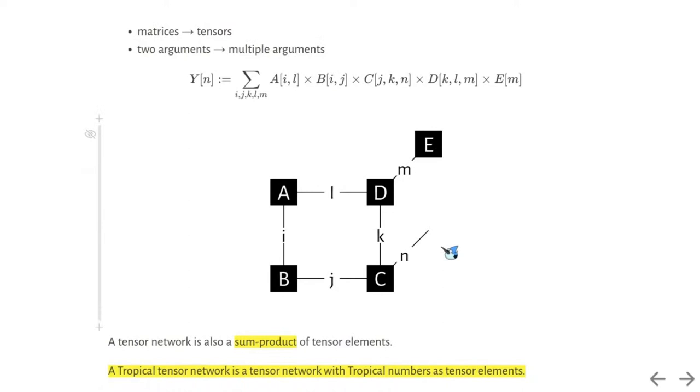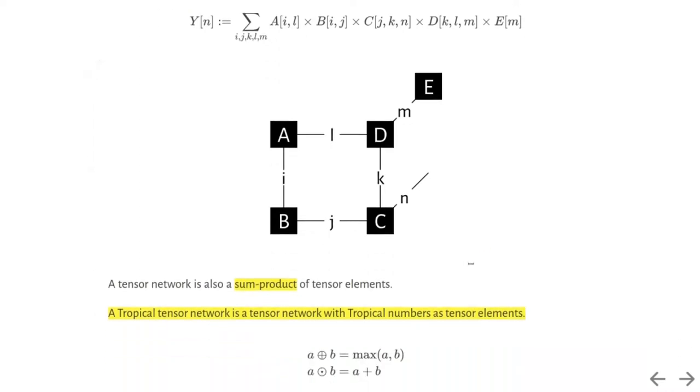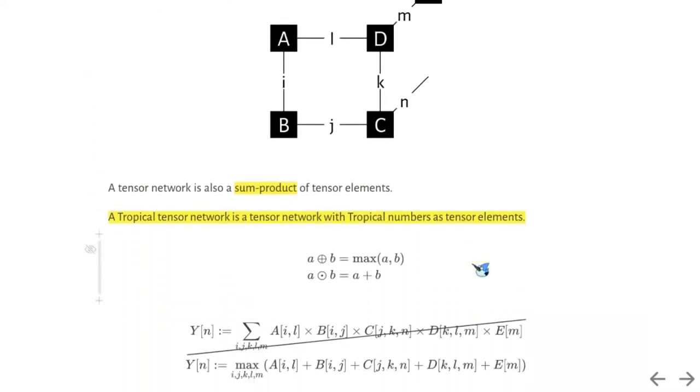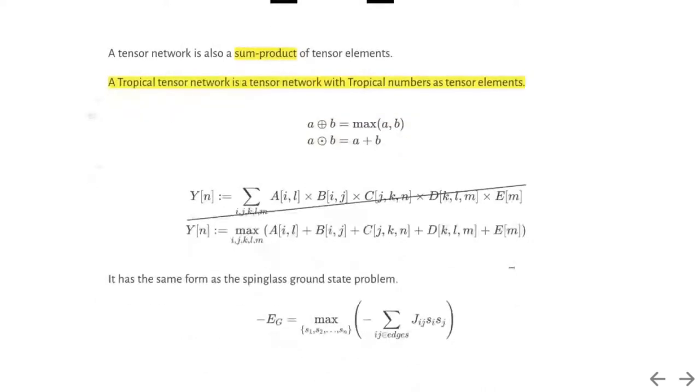We can see a tensor network is also a sum product of tensor elements. A tropical tensor network is a tensor network with tropical numbers as tensor elements. Tropical numbers are numbers with tropical algebra, where the plus in a regular algebra is redefined as a max.